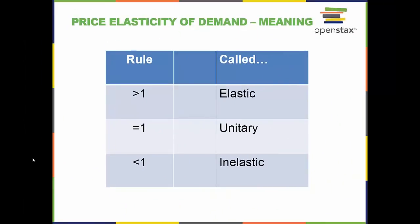If our price elasticity of demand coefficient is greater than 1, we can say that our product or service is elastic between the points on the curve used in the calculation. If it is equal to 1, then it is said to be unitary or unit elastic. If the price elasticity of demand coefficient is less than 1, then it is considered inelastic.